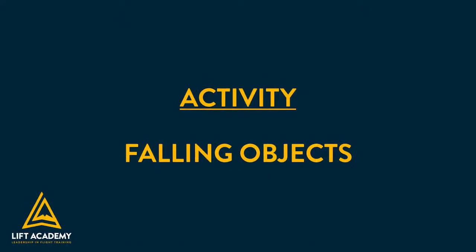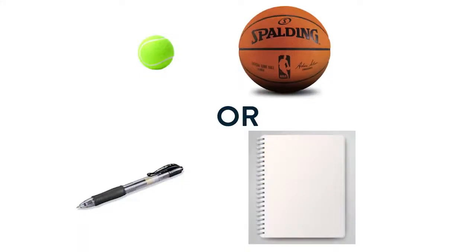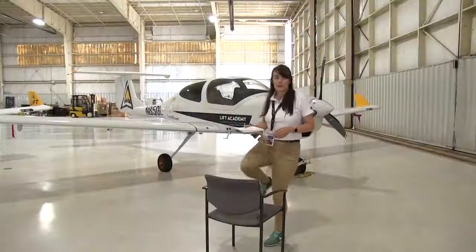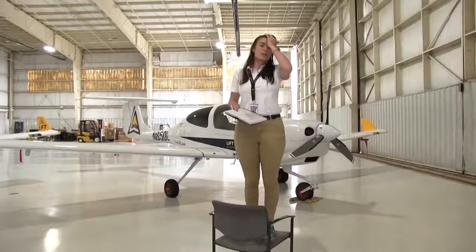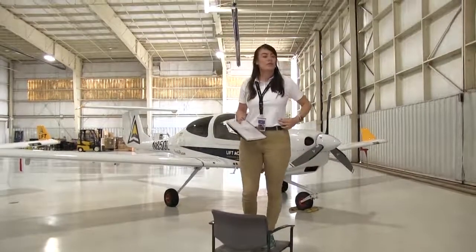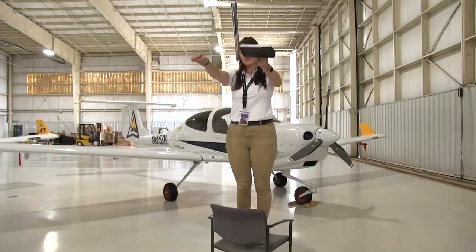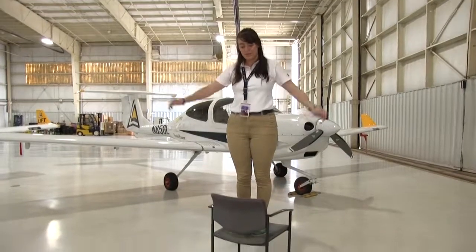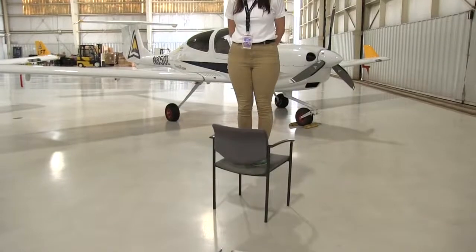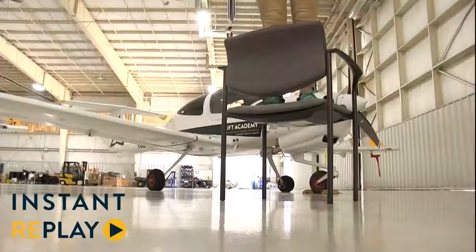Now that we've learned about gravity and weight, we'll go ahead and move on to some activities to demonstrate this. All you will need for this activity are two balls that are different sizes, or two other unbreakable objects. First, stand on a chair. Then hold both objects at arm's length from an equal height. Next, drop both objects at the same time and observe which ones hit the ground first.